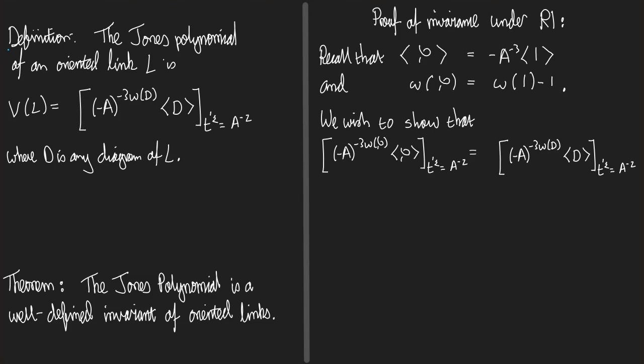So, here is the definition. The Jones polynomial of an oriented link L is called V_L, and it's obtained as follows. Take the Kauffman bracket of D, where D is any diagram of L. So, pick a diagram of L, take its Kauffman bracket, multiply that by minus A to the power minus 3 times the writhe of D.